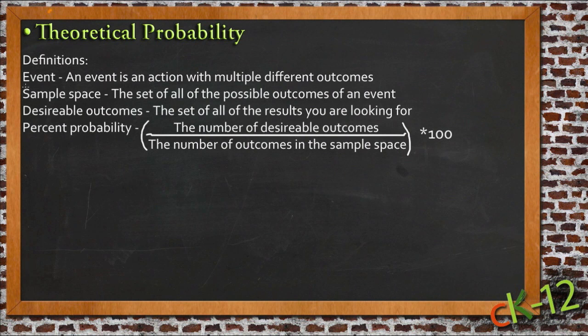The terms that we use include event, and event is just the name that we ascribe to the action itself that we're trying to calculate the probability of. So if you're trying to figure the chance of rolling a 2 on a six-sided die, then the event would be rolling the die. So the event is the actual action that you're doing the calculation for.